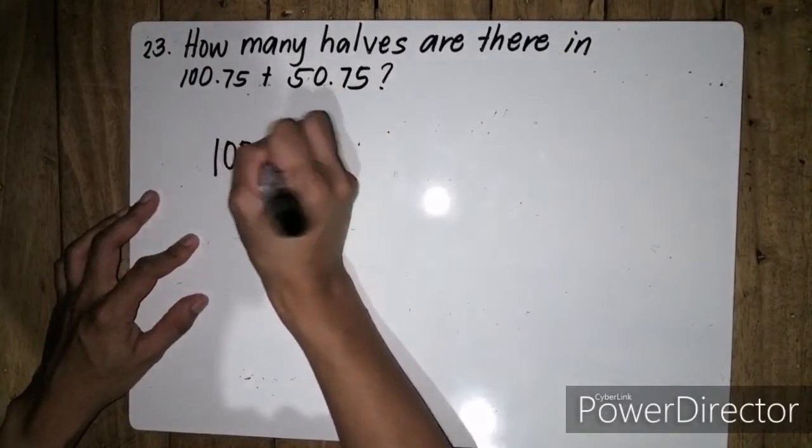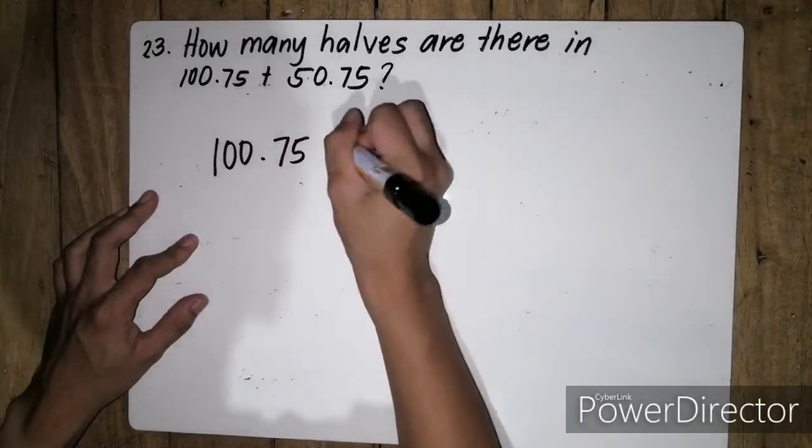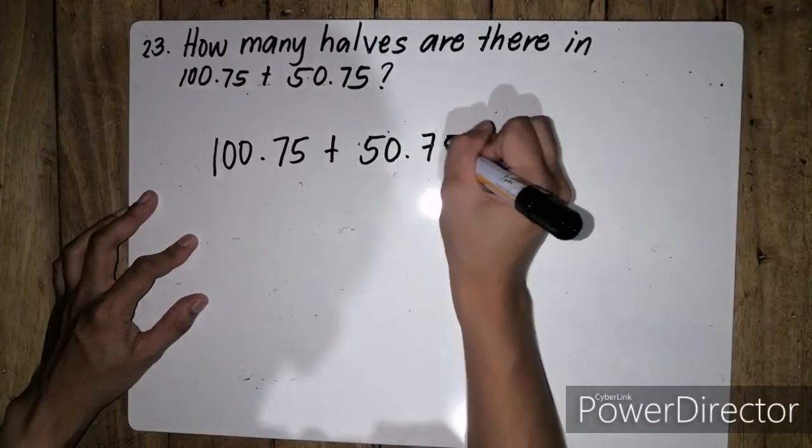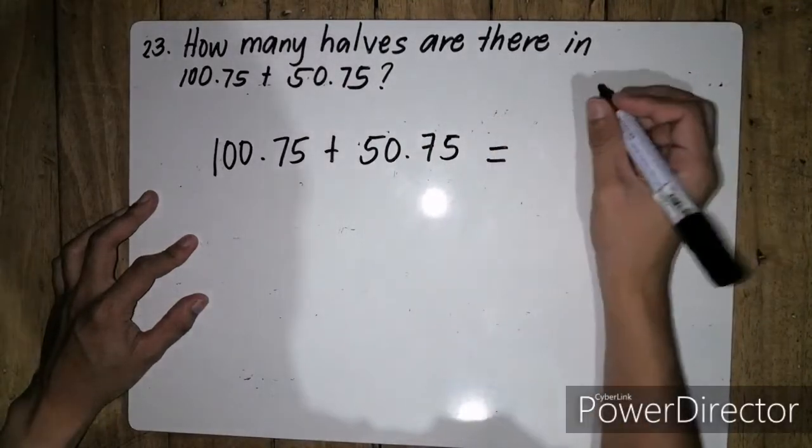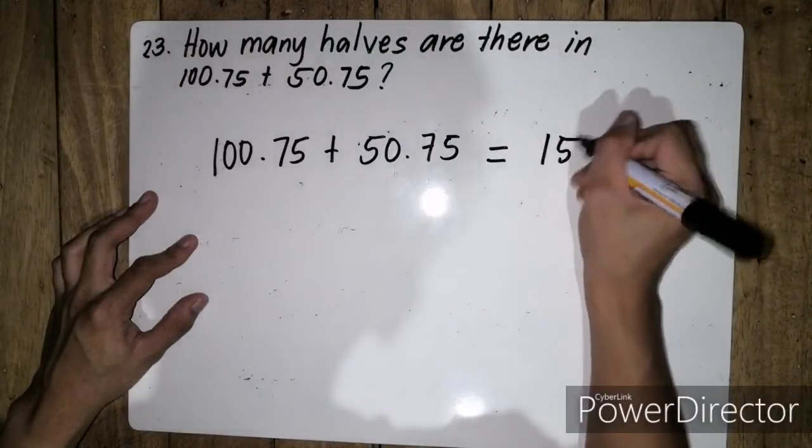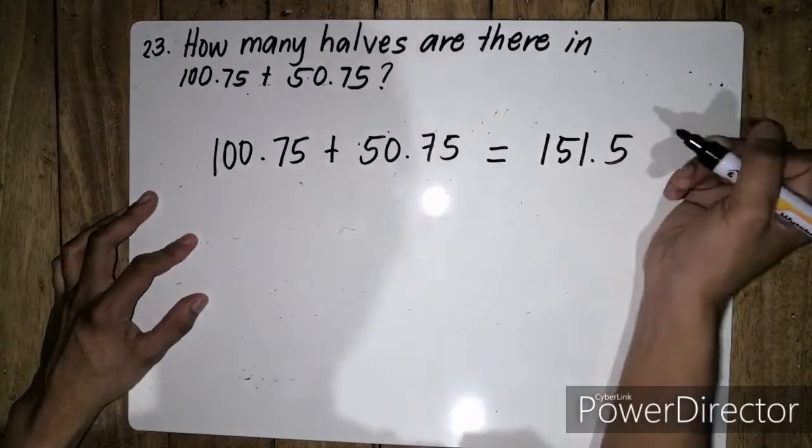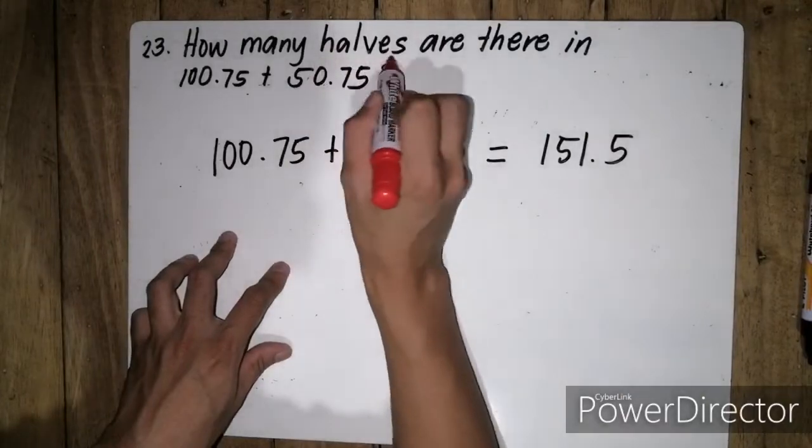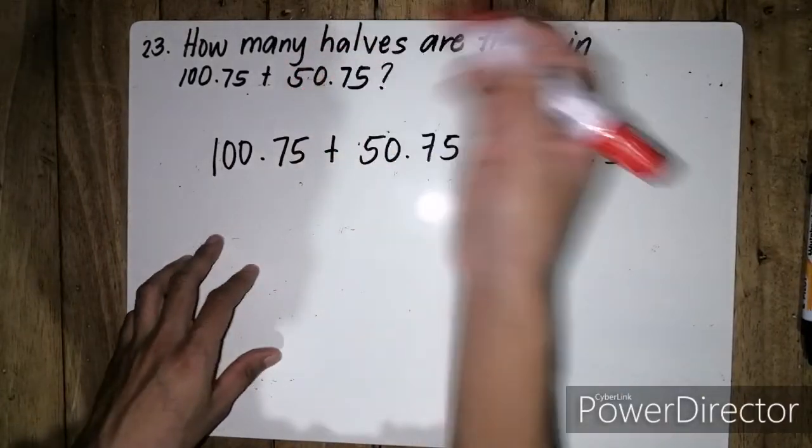So 100.75 plus 50.75 is simply equal to 151.5. Since the question is asking how many halves are there,